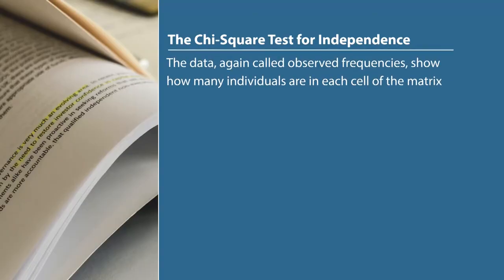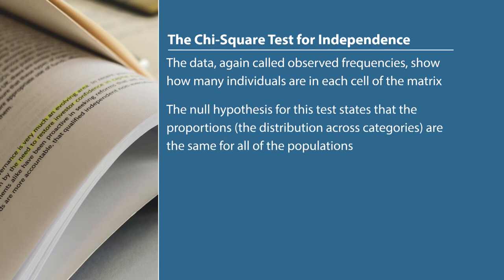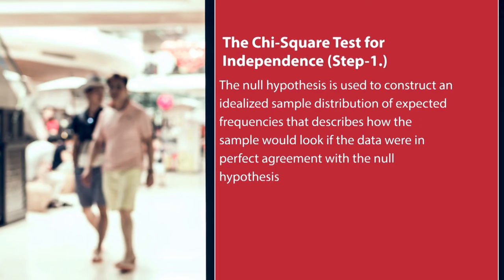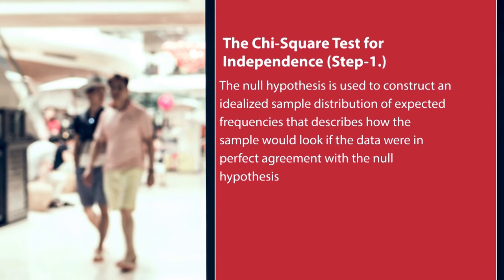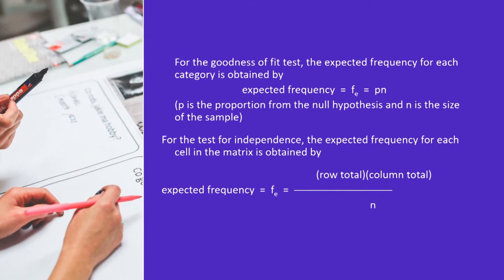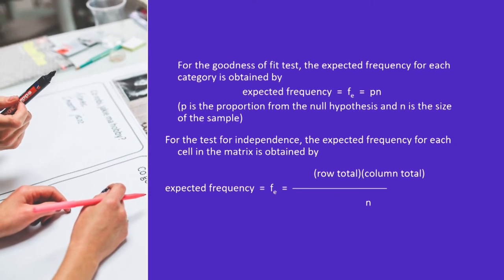For the Chi-square test for independence, the data — called observed frequencies — show how many individuals are in each cell of the matrix. The null hypothesis states that the proportions across categories are the same for all populations. The calculation of the Chi-square statistic requires two steps. First, the null hypothesis is used to construct an idealized sample distribution of expected frequencies. For the goodness of fit test, the expected frequency Fe = p × n, where p is the proportion from the null hypothesis and n is the sample size. For the test of independence, the expected frequency for each cell is Fe = (row total × column total) / n.